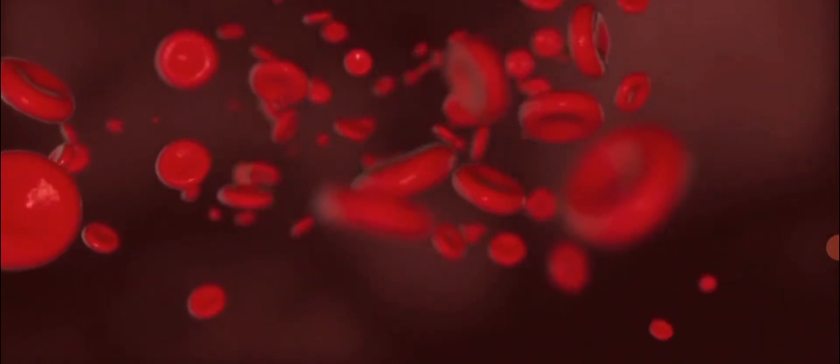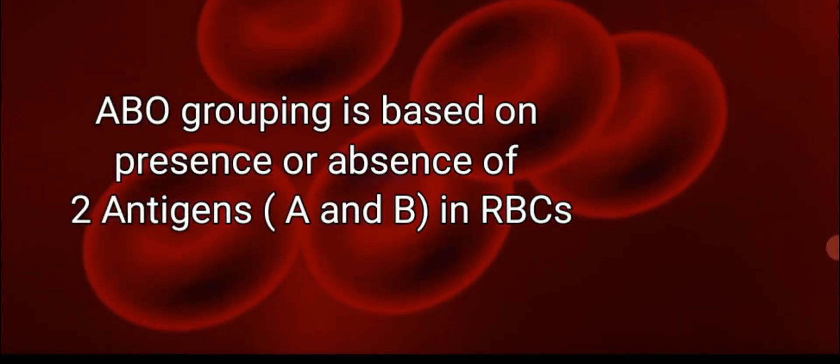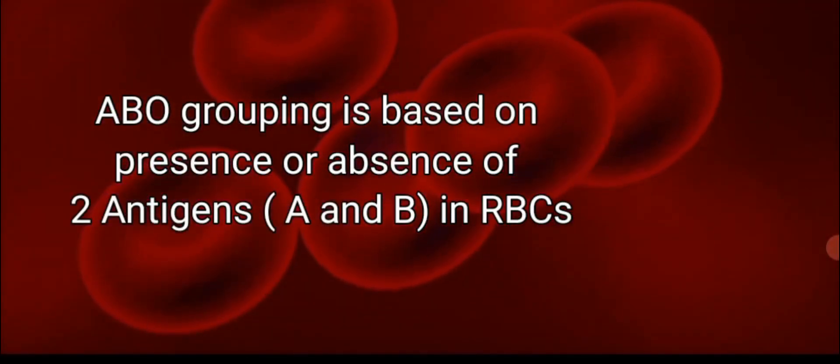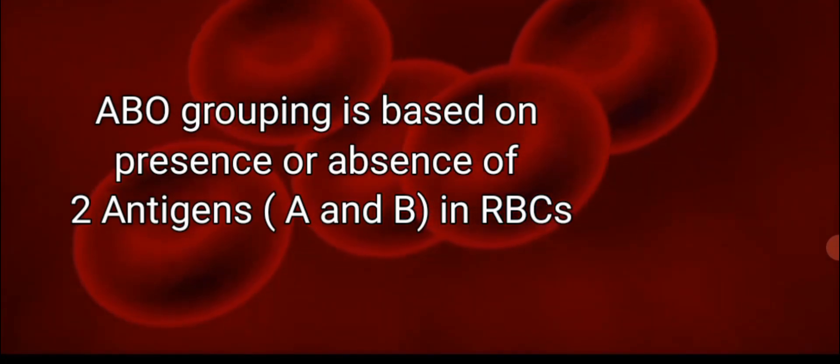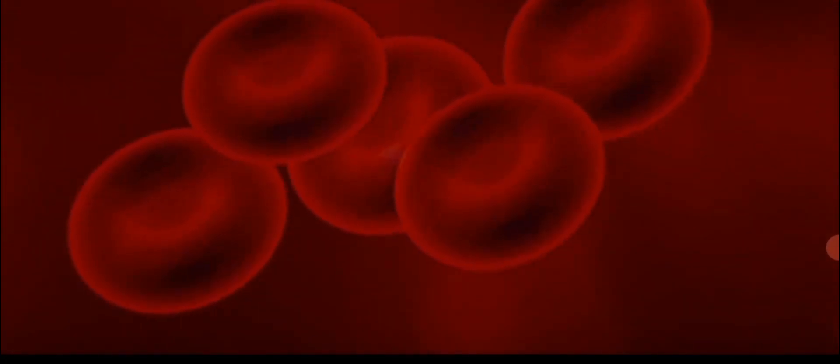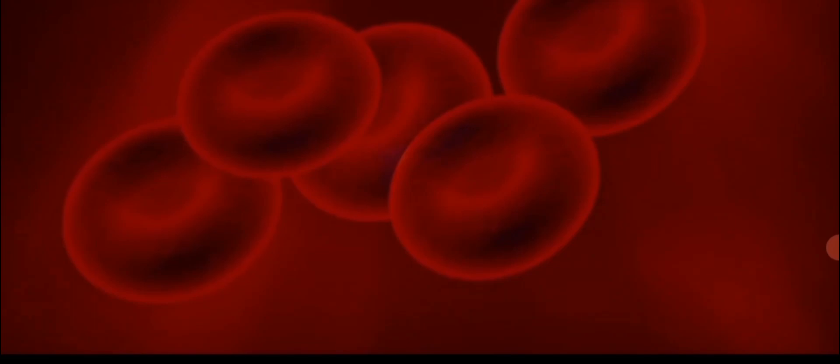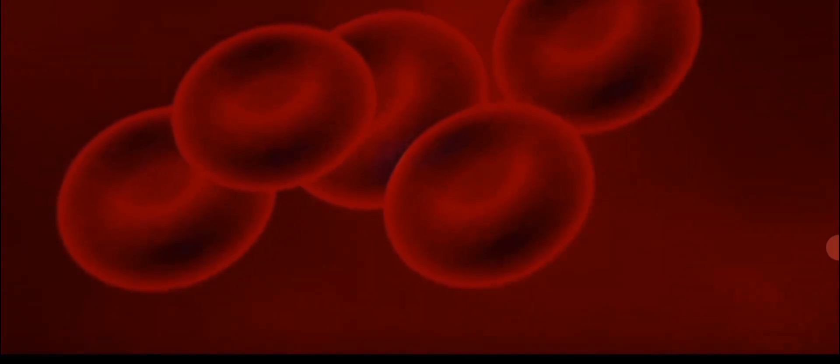ABO grouping is based on the presence or absence of two surface antigens on the red blood cells, namely A and B. The word antigen means chemicals that can induce immune response.